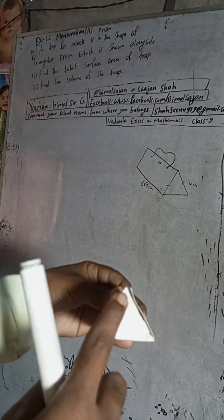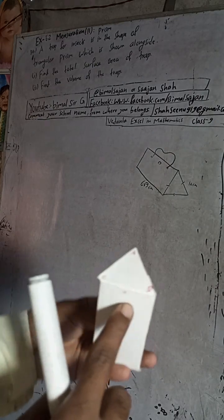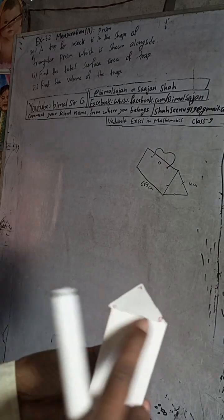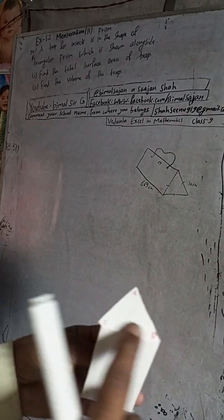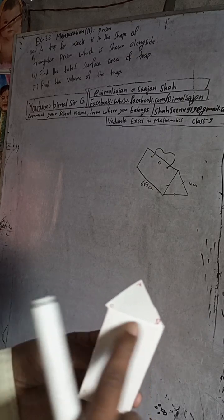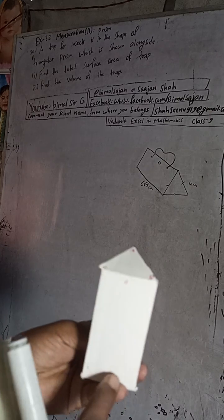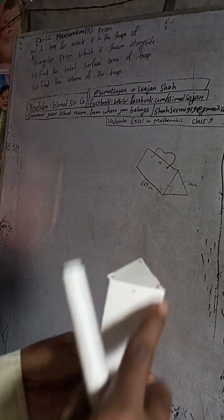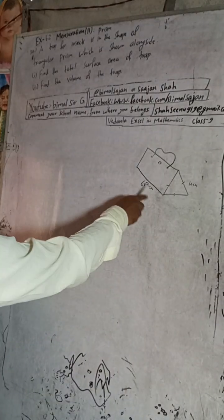I have marked here triangle with vertices A, B, and C. This side is small a, and the length - which is the same for each rectangular face - is given as 6√3. The length of the prism is 6√3.